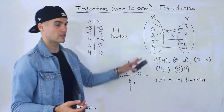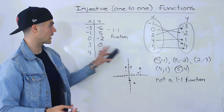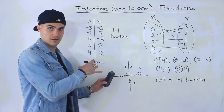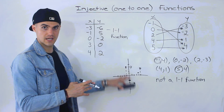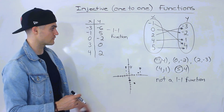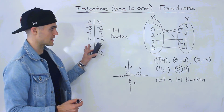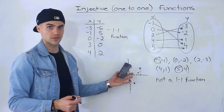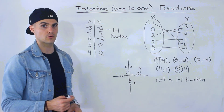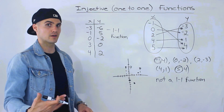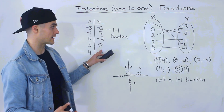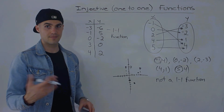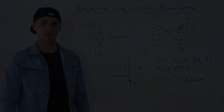If you're not comfortable with mapping diagrams and tables initially, I highly suggest plotting the points out, then looking at the graph and relating back to the table or mapping diagram to understand why something is or isn't a one-to-one function. With enough practice, you'll be able to look at a table or mapping diagram directly and tell without graphing.